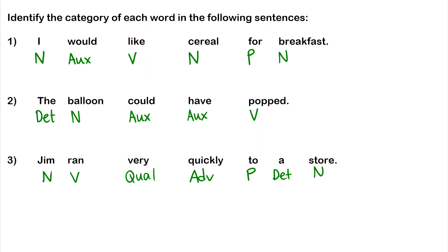Word category identification is something you pick up with practice. You can take pretty much any sentence and try to assign categories to all the words. If you'd like, you can write a sentence in the comments below with the categories, and I can tell you if you're missing anything or have made a mistake.